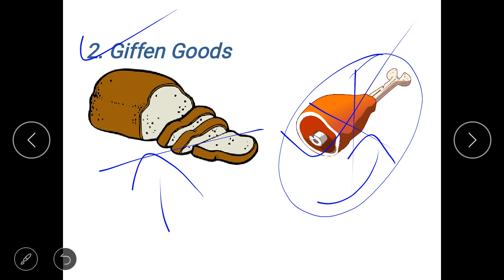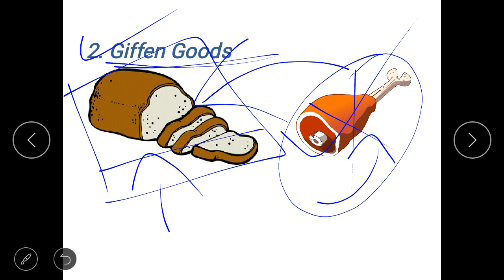Now instead of meat also, the Britons they started consuming more of bread, because even though the price of the bread had increased, it was still cheaper than meat. So now in order to fulfill the calorie intake, the Britons they started consuming more of bread. So the increase in price of the bread led to the further rise in the demand of bread instead of falling the demand. So this effect, this kind of goods, the bread here is called your Giffen goods, so your Giffen goods they do not comply with the law of demand.